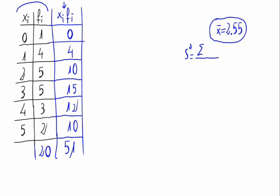The x sub i squared times the f sub i divided by n minus the mean squared. The denominator n is 20, the addition of all the f sub i's. The mean is 2.55, so 2.55 squared.